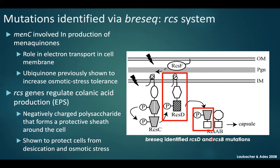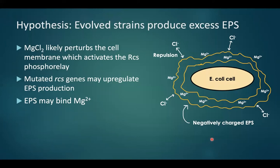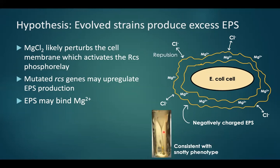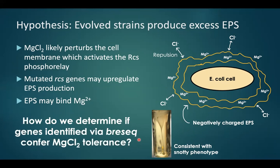We identified RCS-D and RCS-B gene mutations. The hypothesis is that the evolved strain is probably producing excess EPS: magnesium chloride perturbs the cell membrane, activating the RCS phosphorelay, and the mutated RCS genes may be upregulating EPS production. There is previous evidence showing EPS binding heavy metals such as zinc or arsenic, so it's possible EPS also has a magnesium-binding effect — consistent with that snotty phenotype of the large macro structure observed in the test tubes.